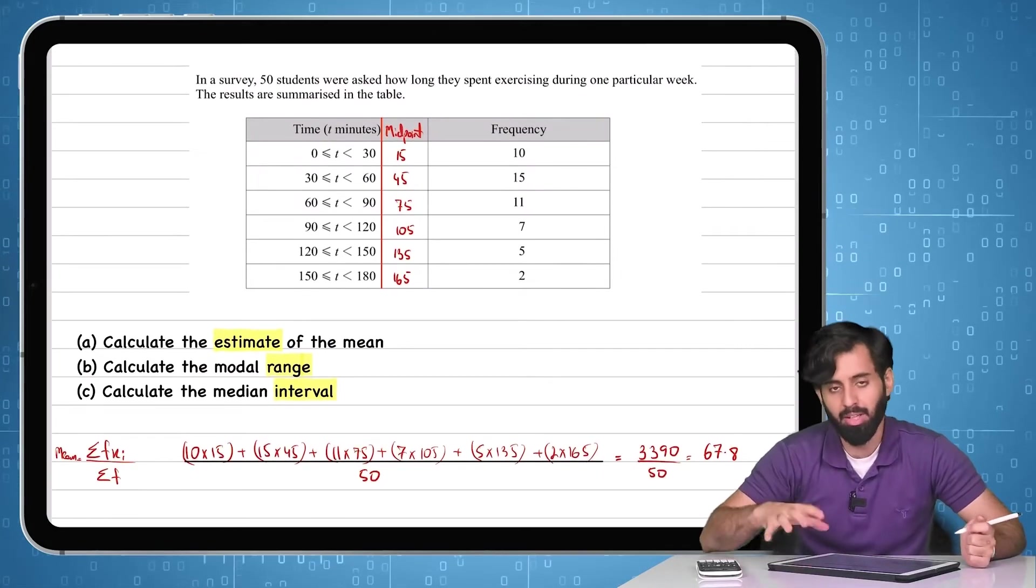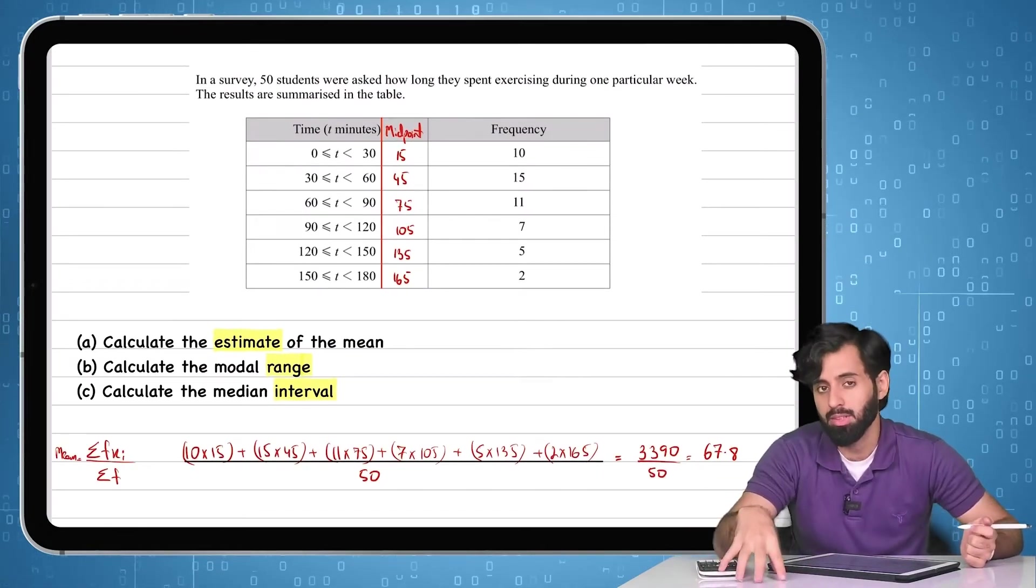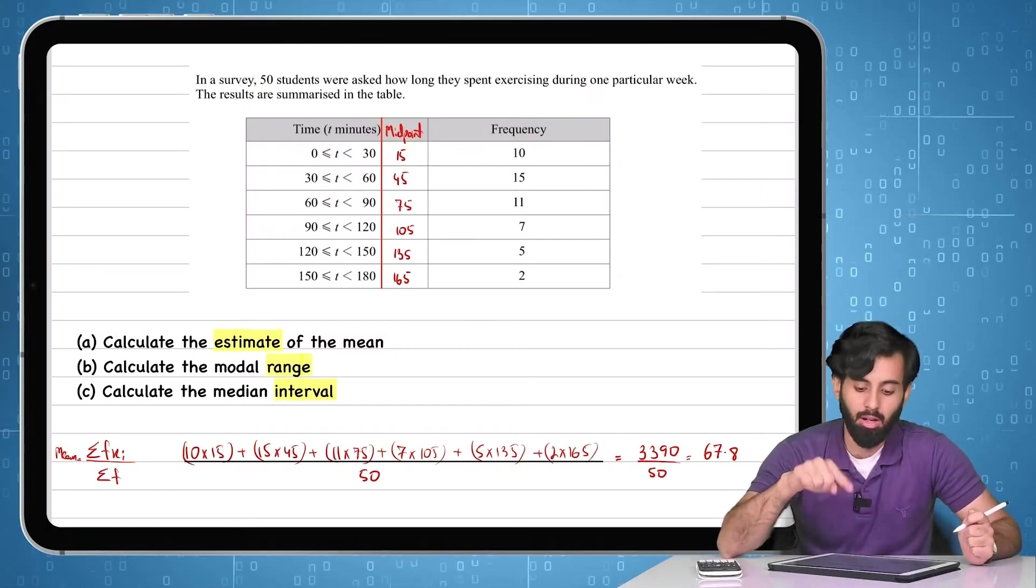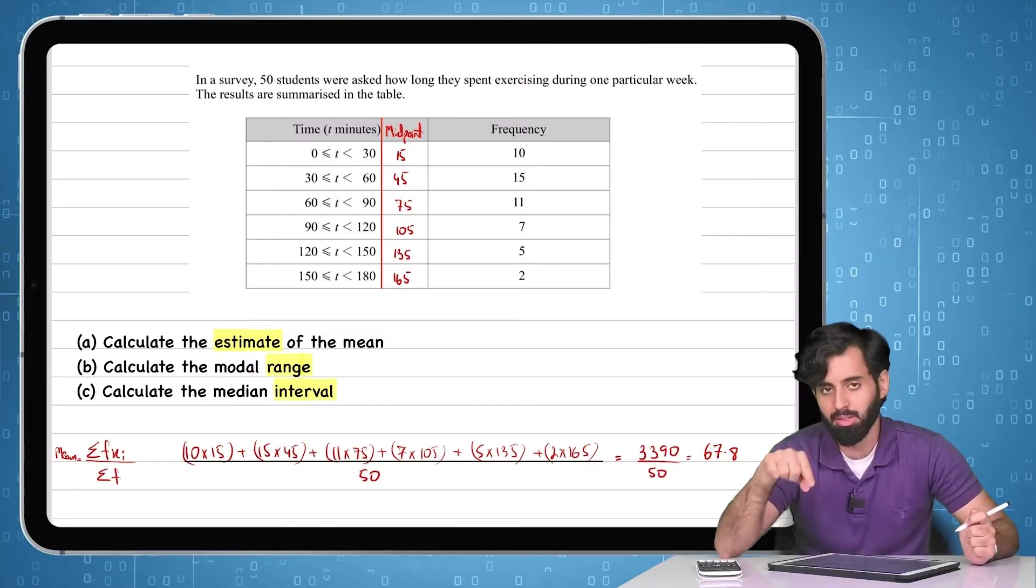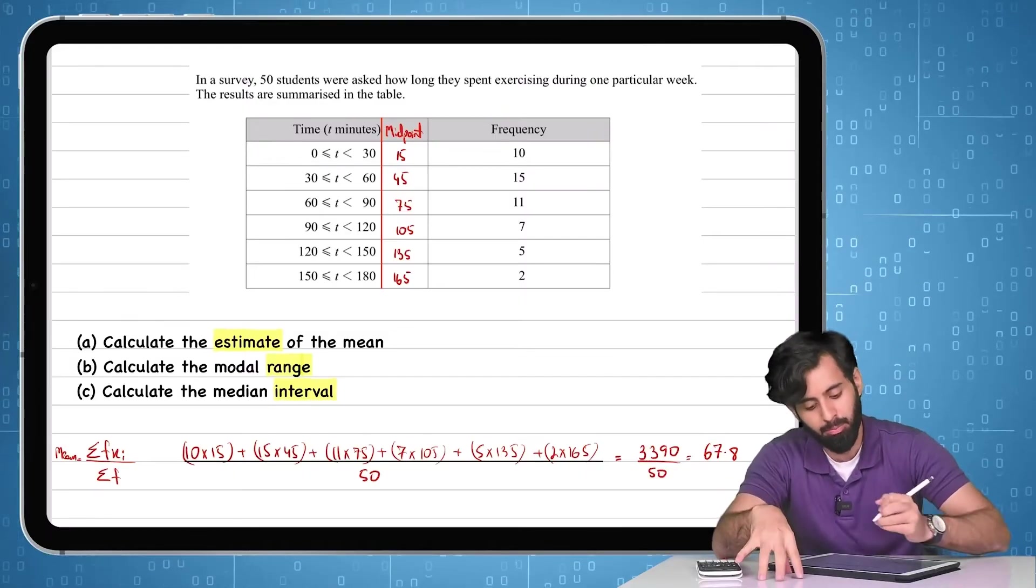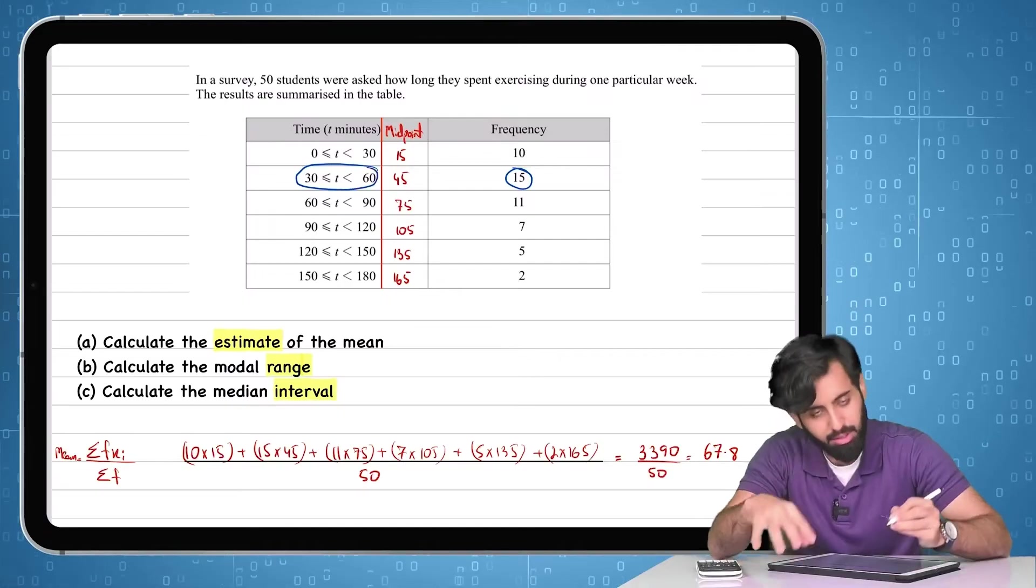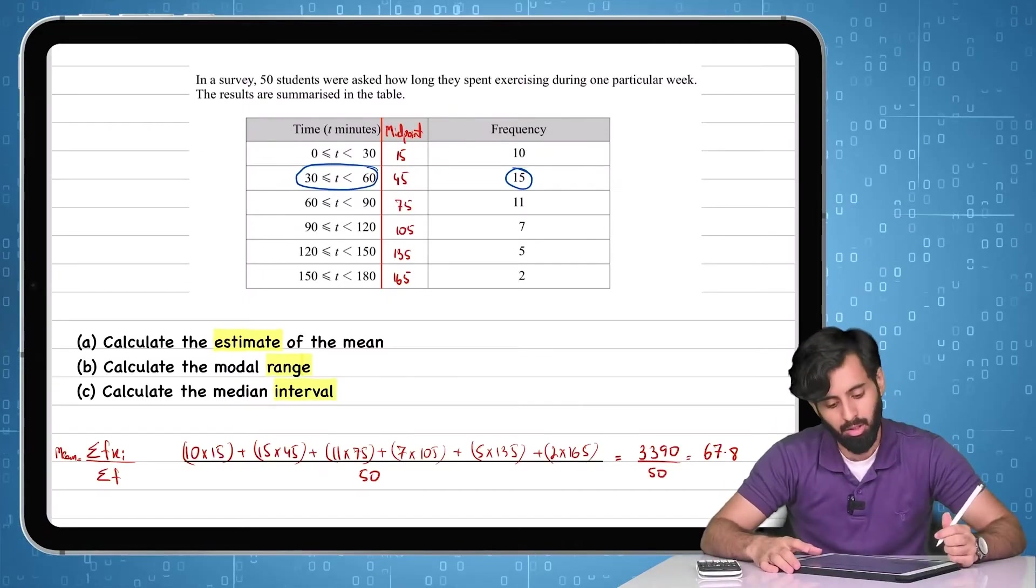That means here, again, you're going to look for the highest frequency, which is 15. But you're going to look for the range of which the frequency is 15. So that means there's not going to be an individual value. 15 is the highest frequency, and the range of which the frequency is 15 is going to be our modal range.